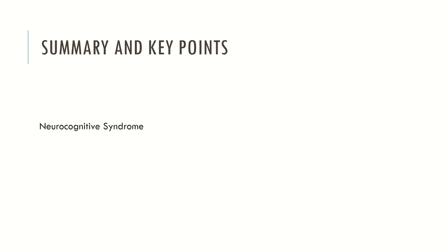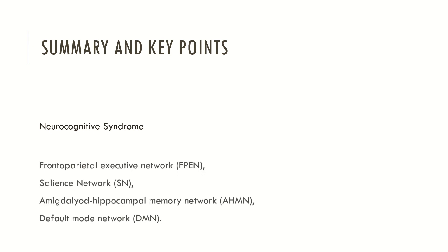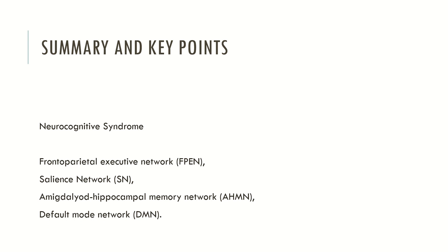The neurocognitive syndrome has several symptoms associated with several neural networks, which are extremely important in cognitive and mental processing. These networks are the frontoparietal executive network, the salience network, the amygdaloid-hippocampal memory network and the default mode network. When there are impairments in these networks, symptoms tend to be clustered together and manifest in the flow of consciousness, resulting in daily life impairments and difficulties in psychological well-being.